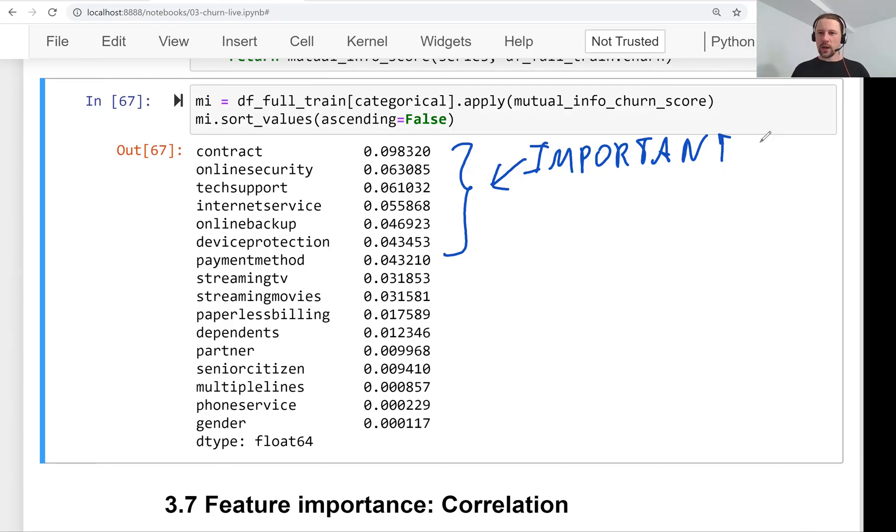These variables are why machine learning actually works. By learning that a customer has a month-to-month contract, has no online security, and doesn't use tech support, we can already learn quite a lot about this customer. All these features and values we learn are pretty good indicators that maybe this customer is not likely to stick around with us for a long while. These are actually the kind of signals that machine learning models pick when training, so it learns these patterns, and this is what allows the model to actually make predictions later when we don't know what the churn value is for these particular customers.